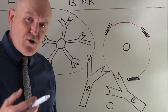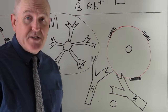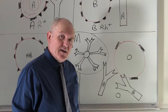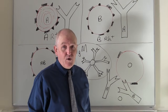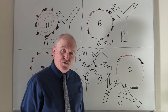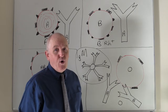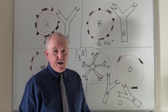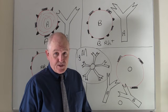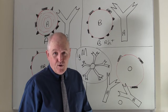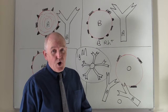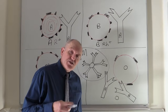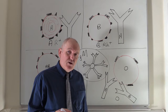So the Rhesus factor is mostly the D factor and it's simply present or absent. That means in addition to being A, B, AB, or O, someone can be either of those groups with or without the Rhesus factor. So blood groups can be A positive or A negative, B positive or B negative, AB positive or AB negative, and O positive or O negative. That describes the blood groups using the ABO Rhesus system.